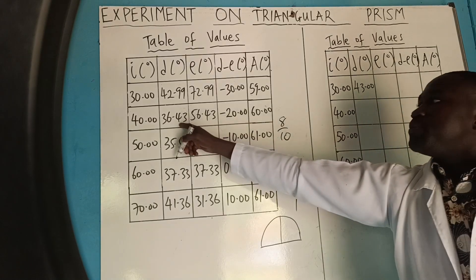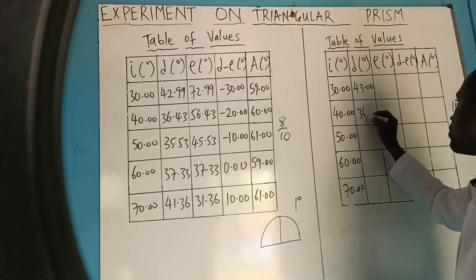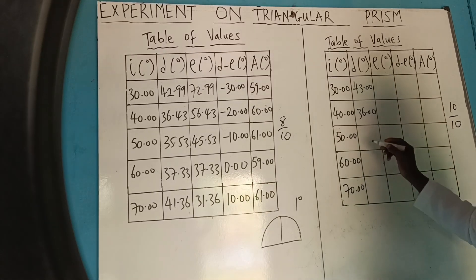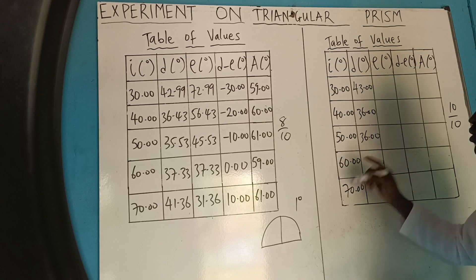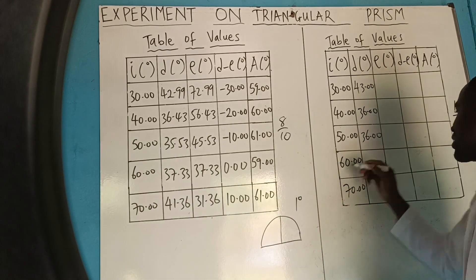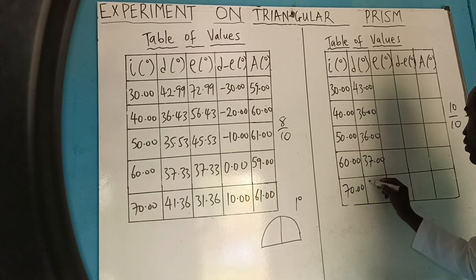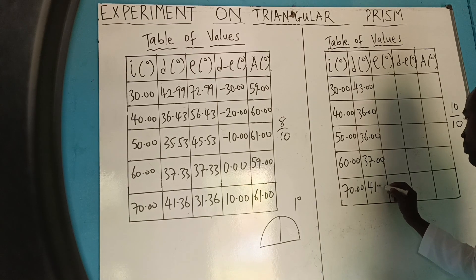Then, the next one, this will be 36.00. Then, this is also 36.00. I am approximating to nearest degrees at 7.00 and 41.00.